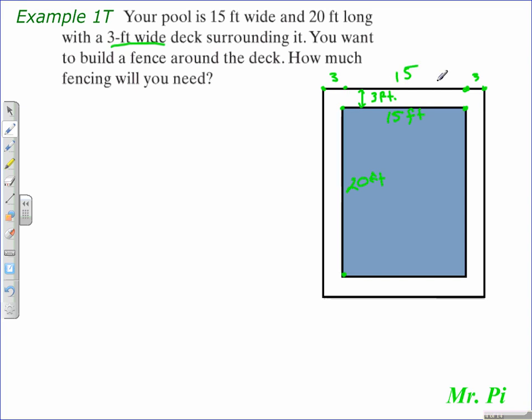And then in between those 3 feet it is 15 feet from here to here. So the total width is found by adding the width of the decking to the width of the pool, which in this case would give 21 feet.